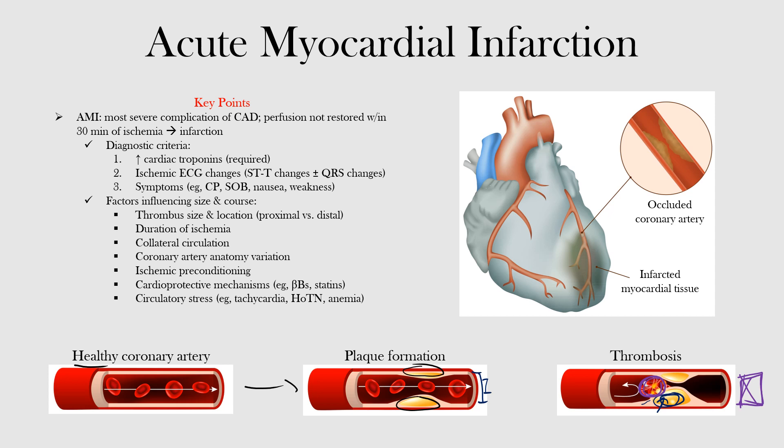Medications also play a role. Beta blockers slow the heart rate and reduce contractility, and have been shown to reduce myocardial metabolism and hence myocardial ischemia. Statins have shown long-term effectiveness in reducing the risk of acute MI, stroke, and cardiovascular mortality. Factors causing circulatory stress — such as tachycardia, hypotension, and anemia — can exacerbate acute coronary syndrome and potentially lead to larger infarctions.